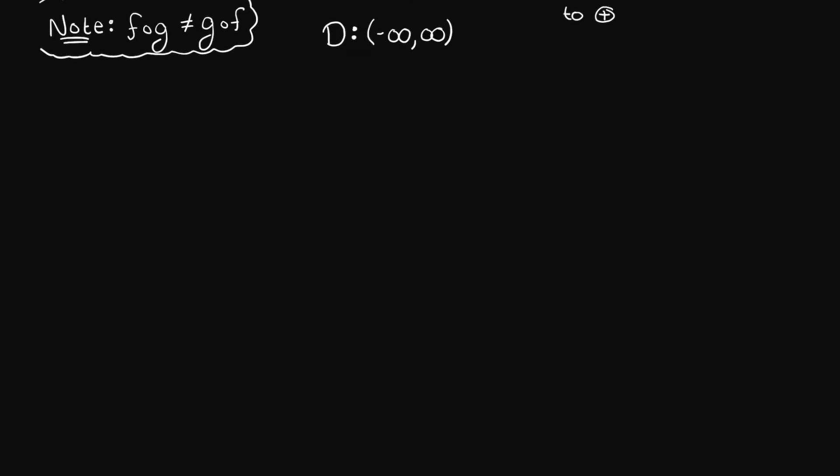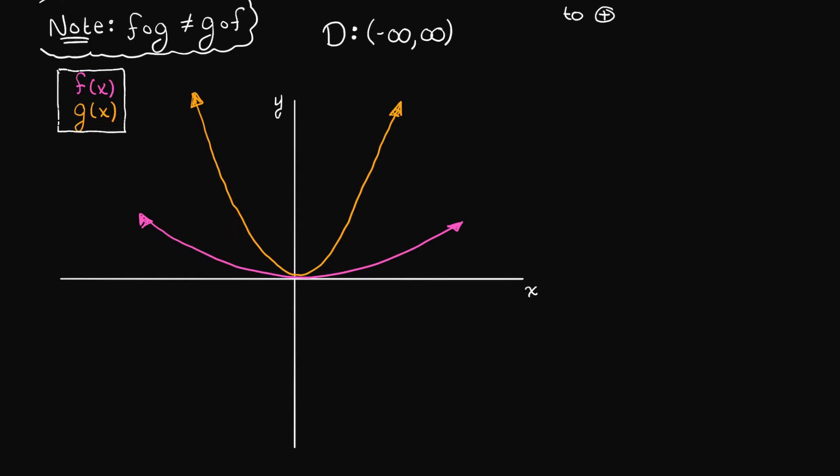Let's do another example. What if we were given this graph showing two different functions. The pink graph is f of x and the orange graph is g of x. Let's say the question is asking us to solve for f of g of x at 2.